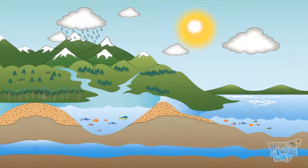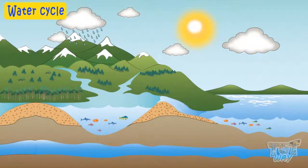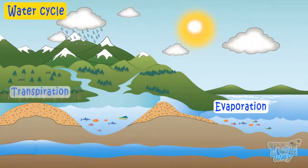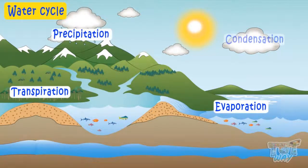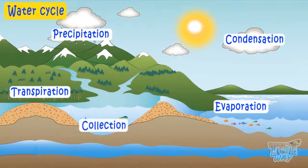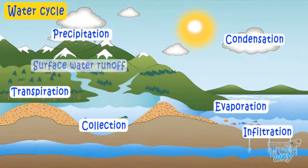Now we know all the parts of the water cycle. That is, evaporation, transpiration, precipitation, condensation, collection, infiltration, and surface water runoff.